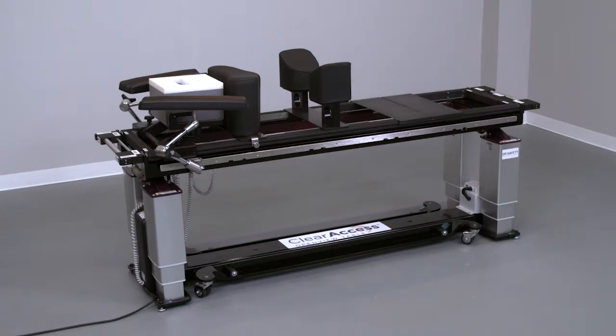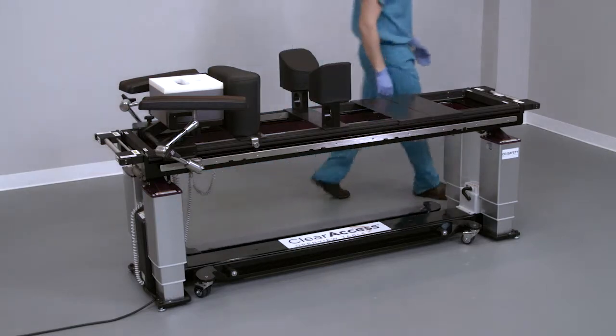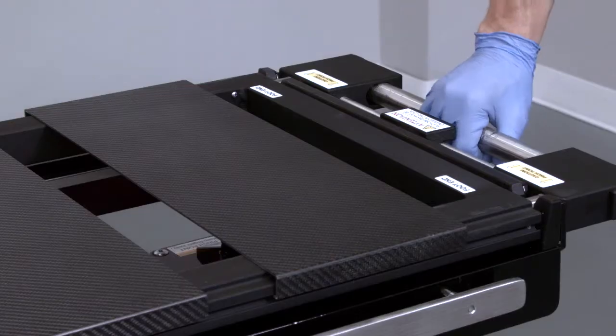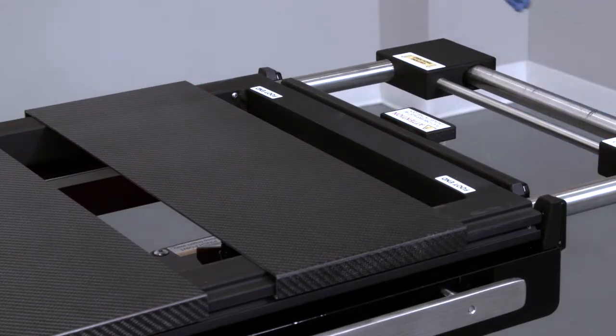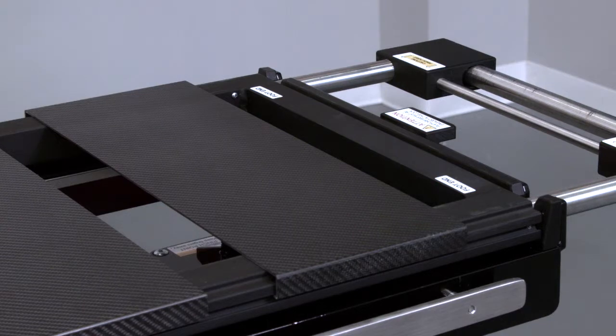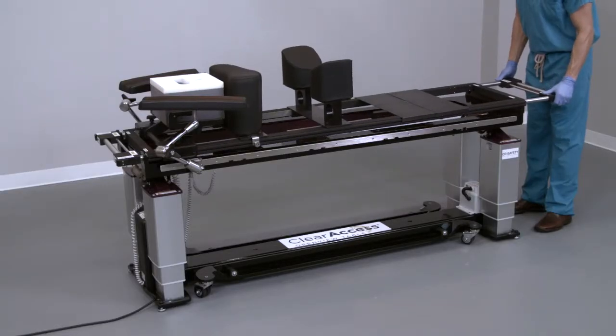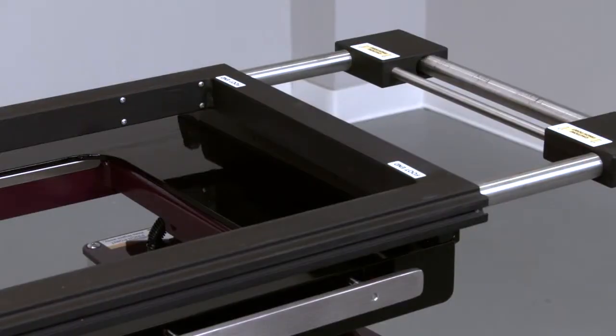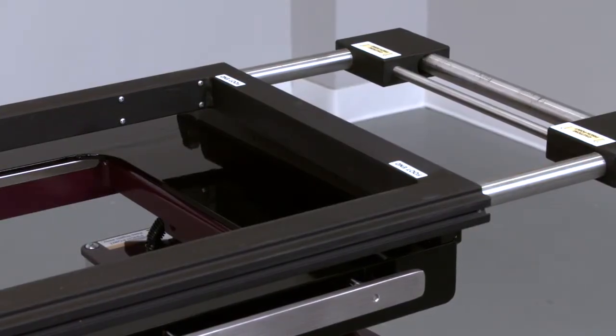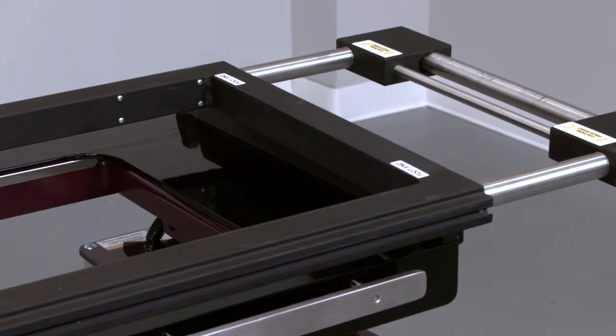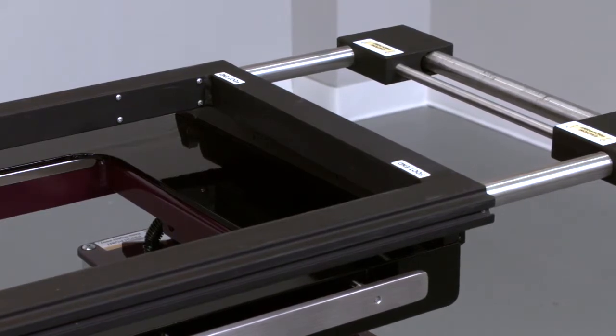First, remove both the thigh pad and the ankle rest from the carbon support pieces. Grasp the silver handle at the foot end of the prone platform and pull to extend the prone platform until it locks in place. Gently lift the foot end of the prone platform so that the platform is no longer engaged by the cradle of the ClearAccess table base. Then move the prone platform approximately two inches to the left or right and place it down gently so that the platform rests askew at the foot end only.